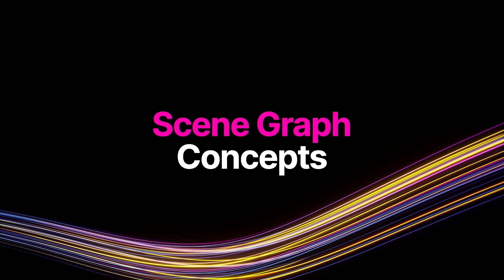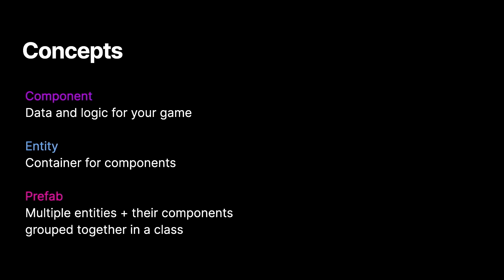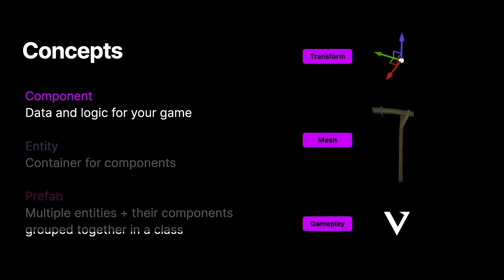Let's look at the three concepts—we keep it simple: components, entities, and prefabs. Starting with the basic building block: components. These are the data and logic you use to build your game. If you've built games in any engine, you're probably familiar with components—we're leaning heavily into composition-oriented design here. Components can be as simple as a transform or mesh, or purely logical like a Verse script, so you can build logical constructs like itemization as well.